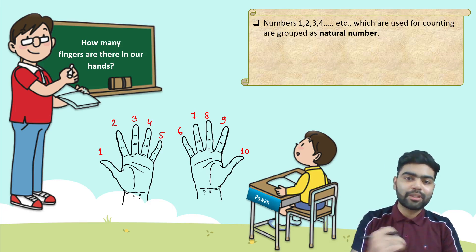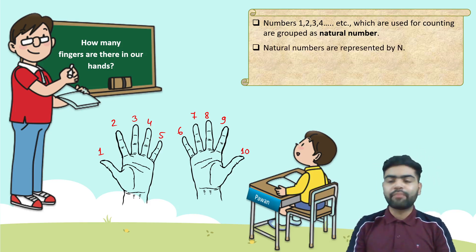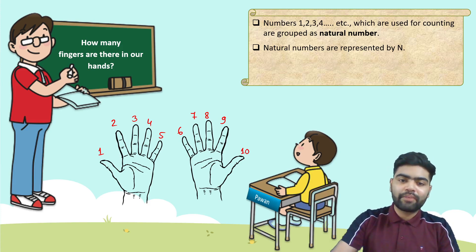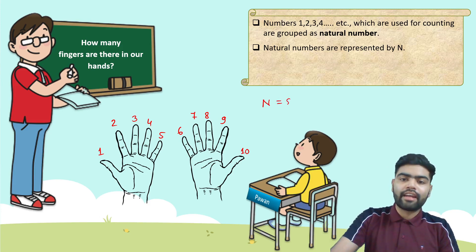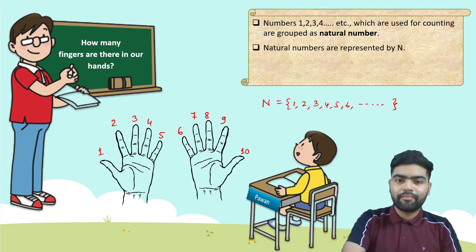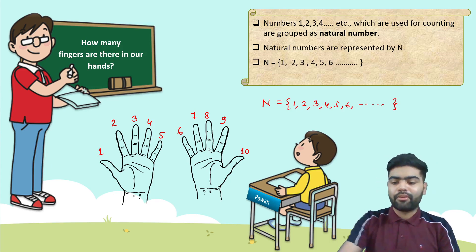These numbers are known as natural numbers, and natural numbers are represented by N. N is this set: {1, 2, 3, 4, 5, 6, and so on}. So this is the set of natural numbers.